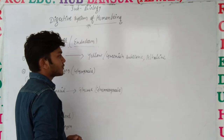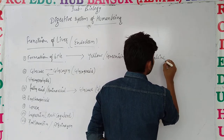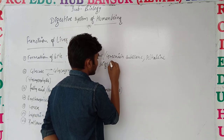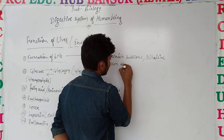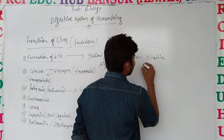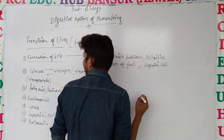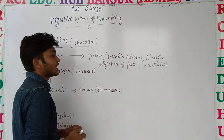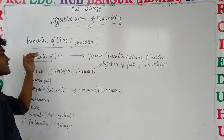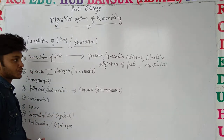Bile is alkaline — it is slightly basic in nature. Its main function is to digest fat. Fat का digest करने का काम करता है, and this is formed in hepatic cells. Hepatic cells के अंदर form होता है, और hepatic cells से मिलकर liver consistent हो रहा है। Bile alkaline होता है, yellow-green substance होता है।